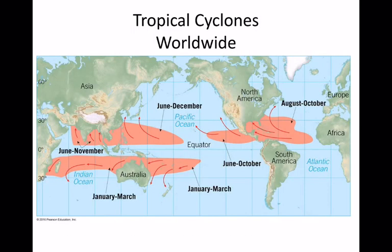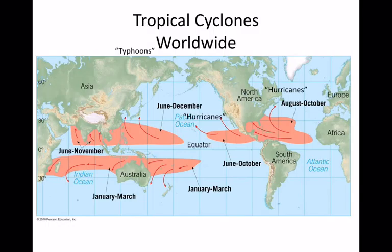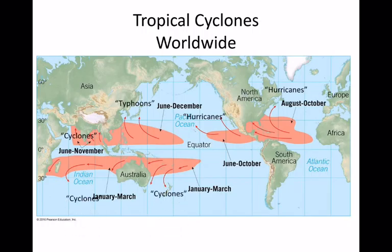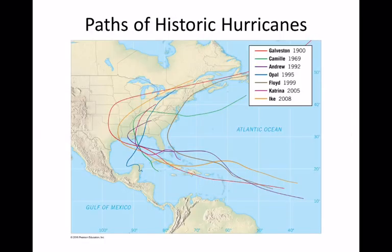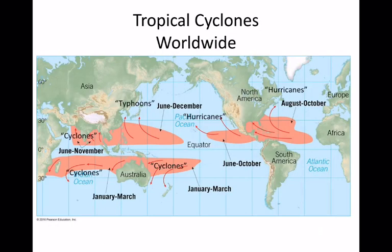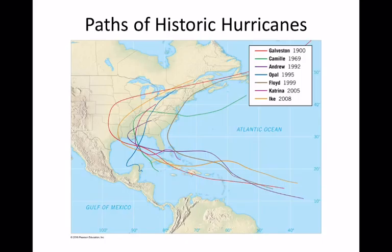Looking at a map, in the United States we call them hurricanes; typhoons are in the western Pacific; and cyclones are in the southern regions. Those are the different names for tropical cyclones depending on location. Figures from your textbook show historic paths of hurricanes across different ocean basins.